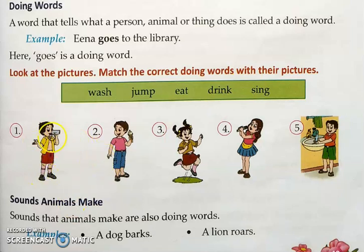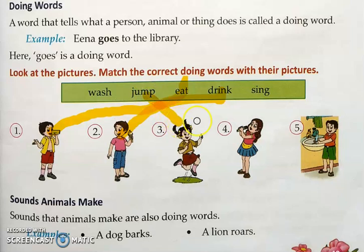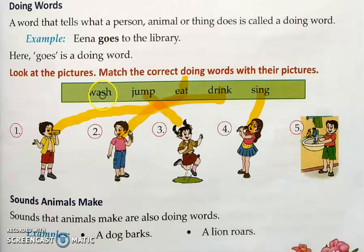See the first picture — what is this boy doing? This boy is drinking water, so we will match with 'drink.' The second picture: he is eating ice cream, so we match with 'eat.' Number three: this girl is jumping, so we match with 'jump.' Number four: this girl is singing, so we match with 'sing.' And number five: he is washing his hands, so we join with 'wash.'